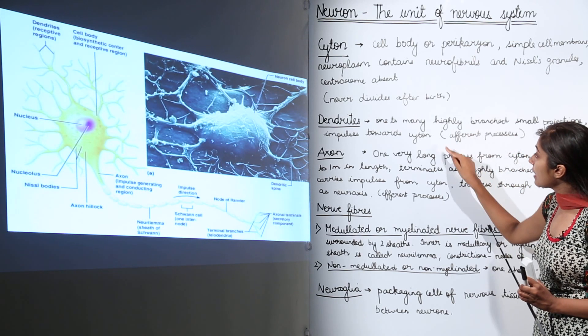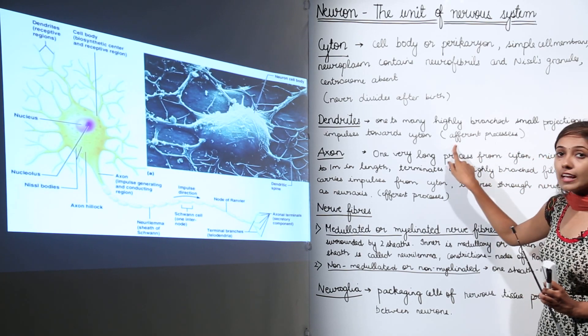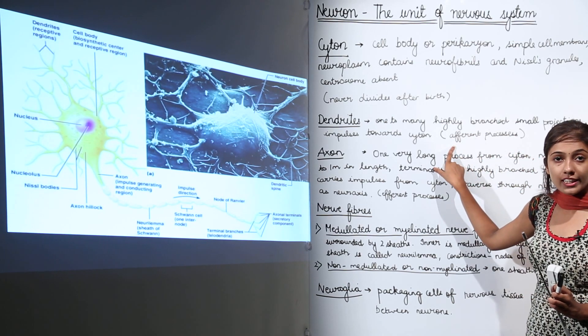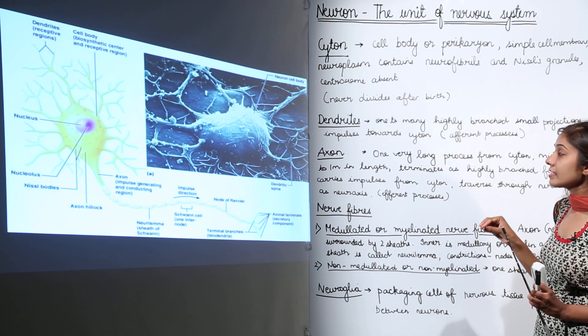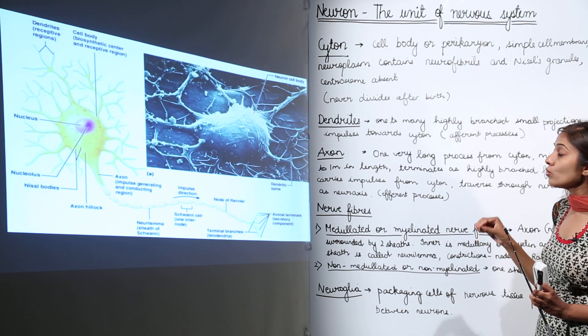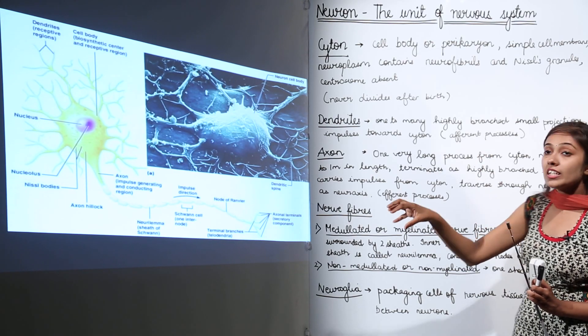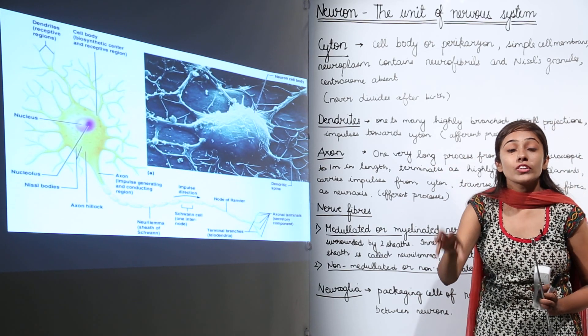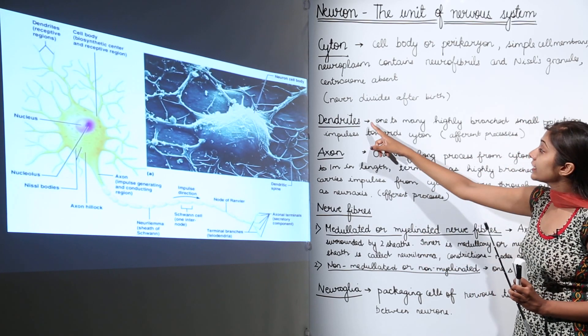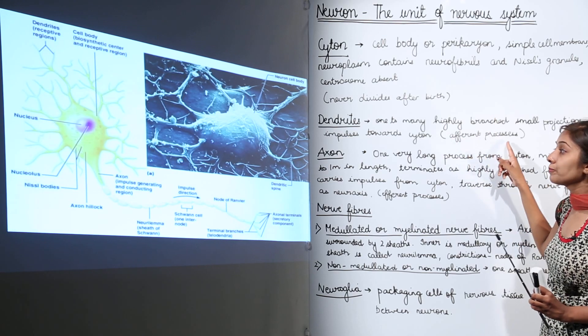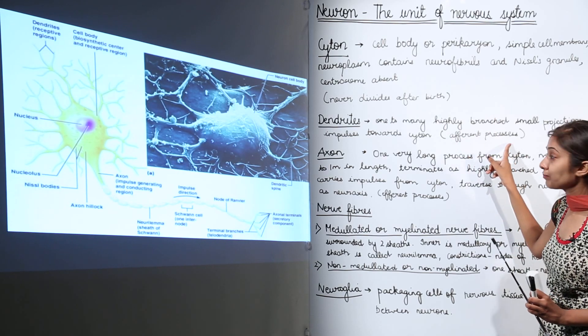Remember: A comes first in the alphabetical order — impulses first reach the cytone (cell body). So dendrites are also known as afferent processes.